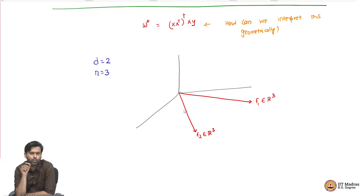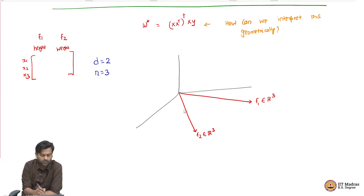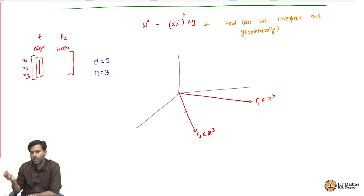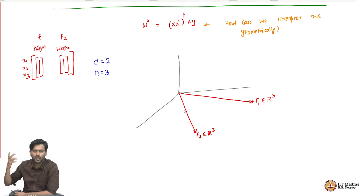Note that if I were to plot the data points, each data point is a two-dimensional point, so I would plot them in a two-dimensional dataset. Here, I am not plotting the data points — I am plotting three-dimensional vectors. F1 is in R³ where the three components correspond to the height of three people. F2 is in R³ where the three components correspond to the weight of three people.